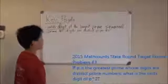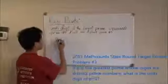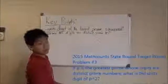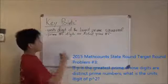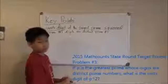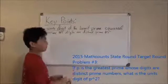Okay, so the key points in the problem are that we are trying to find the unit's digit of the largest prime number with its digits that are distinct primes. So that means they are distinctly prime from each other.